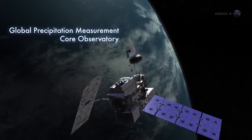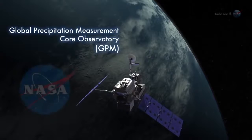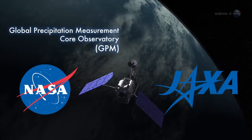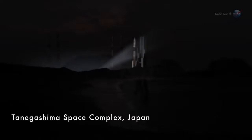It's called the Global Precipitation Measurement Core Observatory, or GPM for short. Built by NASA and JAXA, the Japan Aerospace Exploration Agency, the satellite is scheduled to launch on February 27 from the Tanegashima Space Center in Japan.